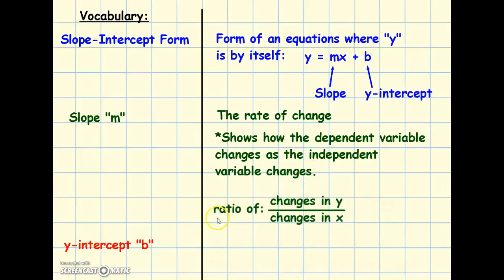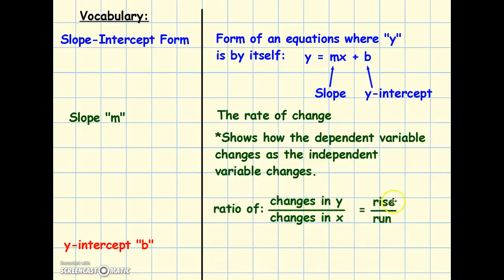Slope is commonly written as a ratio of the changes in y divided by the changes in x. When we graph, the y-axis goes up and down and the x-axis goes laterally. So slope is also commonly referred to as the rise — because our y's go up and down — over the run, because we run laterally.